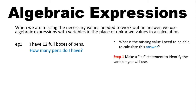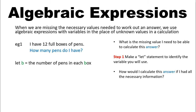So in this example, I don't know how many pens are in a box. So my let statement is: let B equal the number of pens in each box. Your let statement should be fairly clear and should be a full sentence. Don't ever just write 'let B equal box' because that could mean the price of the box, the size of the box, the weight of the box, or any other value relating to the box.